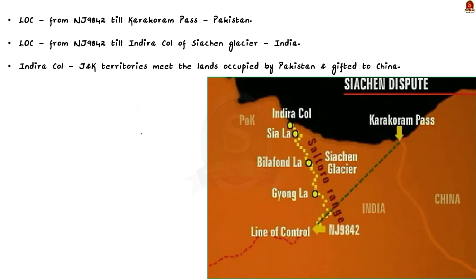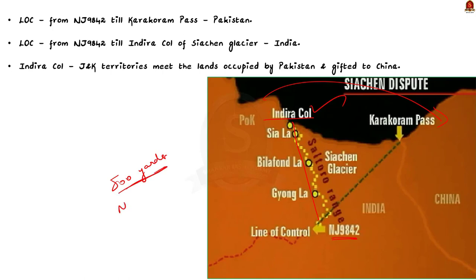But India claims otherwise. India argues that the crest line beyond point NJ-9842 follows a north-west direction and ends with Indra Col of the Siachen Glacier — the area where territories of Jammu and Kashmir meet the lands occupied by Pakistan and the area gifted by Pakistan to China. So the existing Line of Control runs from Manawar in Jammu to Indra Col on the trijunction in the Karakoram mountain range. Indian and Pakistani troops must maintain a no-man's land of 500 yards on each side of the Line of Control. Thus, both Pakistan and India have agreed to uphold the Line of Control, which has been delineated on a map by both sides.